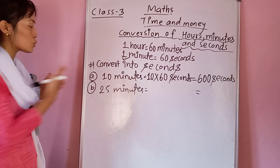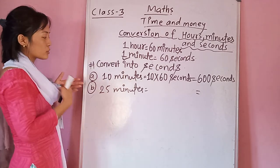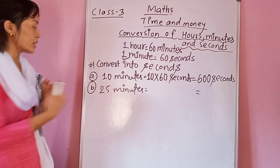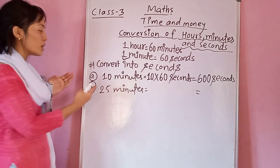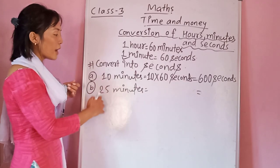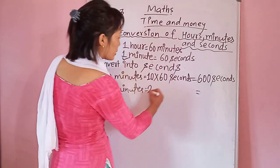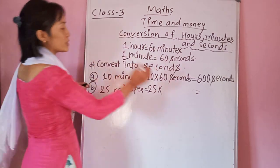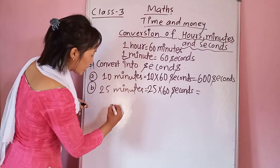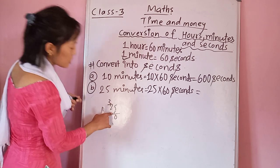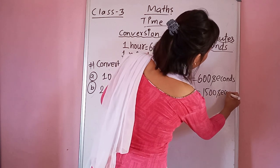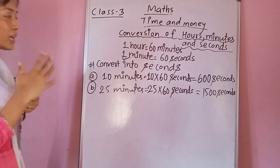Now let's come to question b, which is 25 minutes — solving this will make things more clear. Follow the same method: write 25 as it is and multiply by the relation, which is 60. Write the unit seconds near it. When you multiply 25 by 60 you get 1500 seconds. So in 25 minutes there are altogether 1500 seconds.